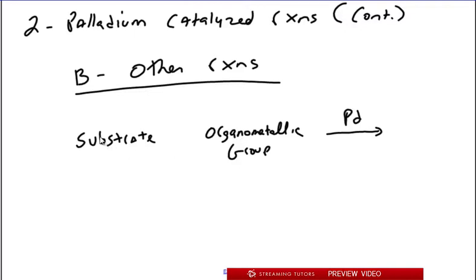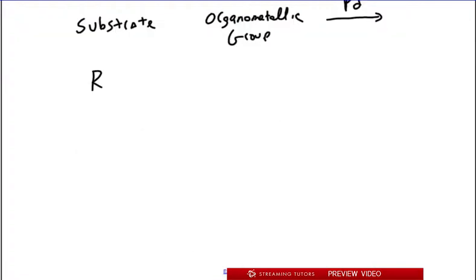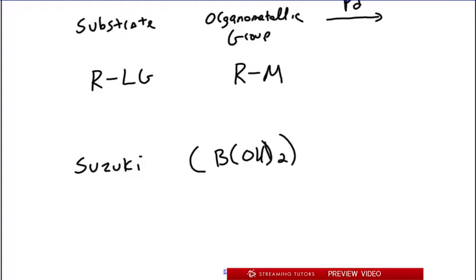These two join together to give a new reaction product. Remember, this is R with a leaving group and this is R with a metal. What defines the following three reactions is what that metal is. If it's Suzuki, if that's the reaction we're dealing with, then the metal is a borate, it's B(OH)2. Now boron isn't really a true metal, it's like a quasi-metal, but for the purposes of this chapter we think of it as a metal. It's a metalloid, so it has metal character to it.